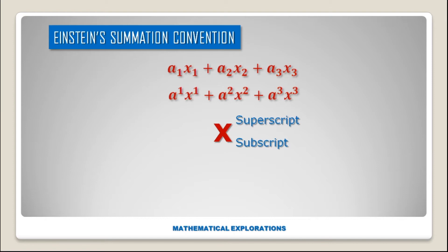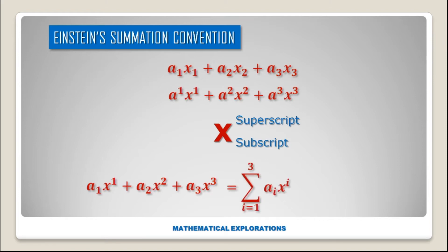Let us consider a1x1 plus a2x2 plus a3x3, which can be written as summation i goes from 1 to 3 of ai xi. In Einstein's summation convention, when an index repeats itself, we drop the summation sign and simply write ai xi.